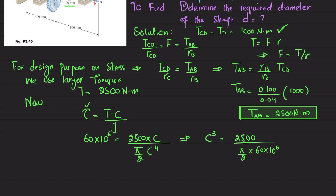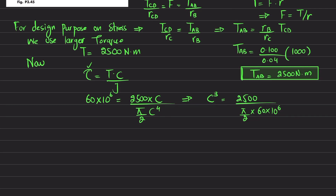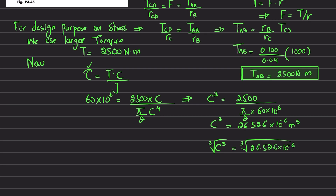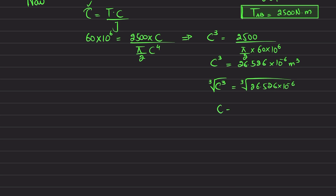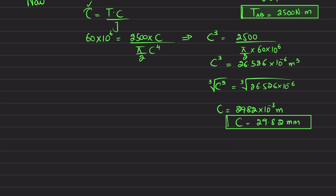Solving: c³ = 2500 / (π/2 × 60 × 10⁶) = 26.526 × 10⁻⁶ m³. Taking the cube root gives c = 29.82 × 10⁻³ m, or 29.82 mm. The diameter based on allowable shear stress is d = 2c = 2 × 29.82 = 59.6 mm.